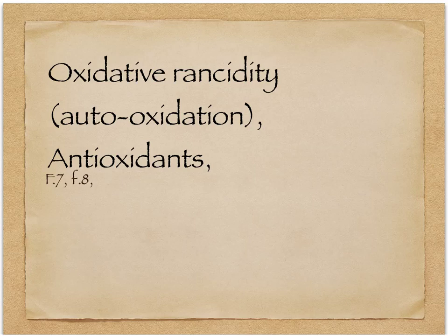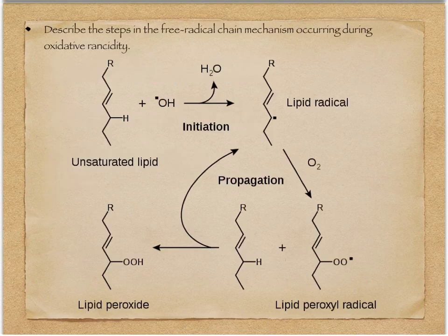So now we're looking at a higher level of food chemistry. Starting in F7 here, we're looking at oxidative rancidity — the process by which things oxidatively go rancid. Here's the process we'll be looking at. This is the content standard. This is what it says you need to be able to do: describe the steps in the free radical chain mechanism occurring during oxidative rancidity.